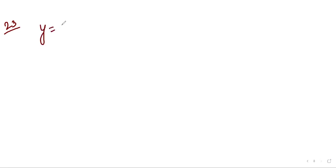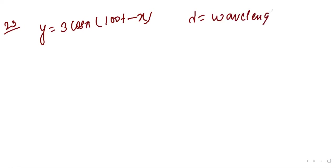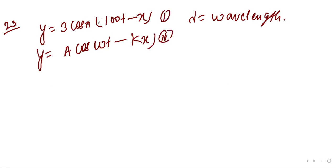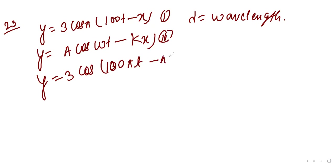Question 23: The equation of a wave travelling in a string is y = 3 cos(π(100t − x)). Find its wavelength λ. The standard equation of a wave is y = A cos(ωt − kx). Taking π inside: y = 3 cos(100πt − πx), so ω = 100π and k = π.